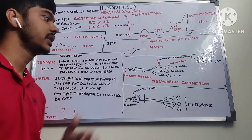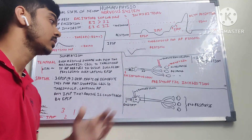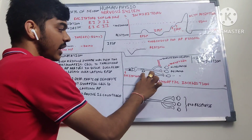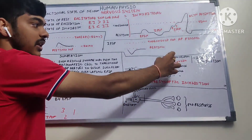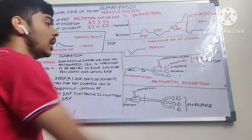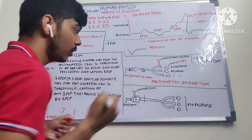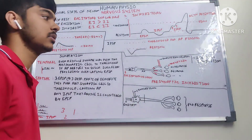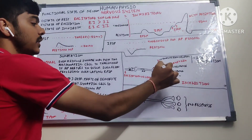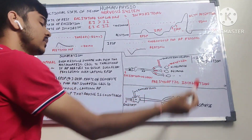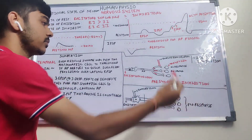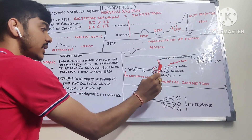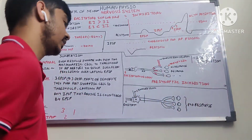Now let's come to inhibition of transmission. In pre-synaptic inhibition, an excitatory neuron is producing a positive response, but at the synaptic junction there is an inhibiting neuron producing a negative influence. Neurotransmitters are released but not at the target synapse, so there is no response from the target cell. This is very selective inhibition — only the desired cell is inhibited.